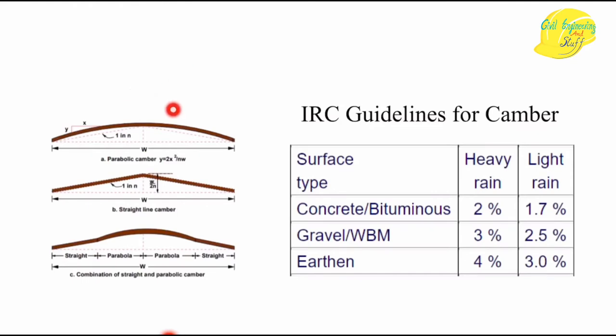For earthen roads it is very important that rainfall water is immediately drained off, because the road is natural soil — if water remains on the soil for a long time, it loosens the bonding between soil particles, weakening the road. That is why camber values increase as the quality or material of the road decreases.